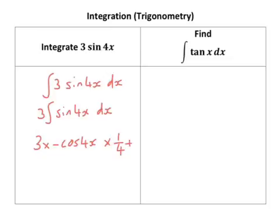Let's simplify all of that. Oh and don't forget plus C. So we should have minus three-quarters cosine 4x plus C. Pretty straightforward.